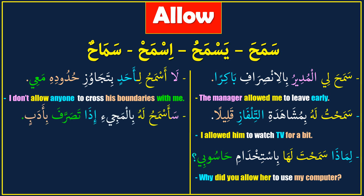Next sentence: 'Sa asmahu li ahu bil-majii idha tasarrafa bi adab' — it means 'I will allow him to come if he behaves politely.' Sa asmahu: I will allow. Li ahu bil-majii: him to come. Idha tasarrafa bi adab: if he behaves politely.